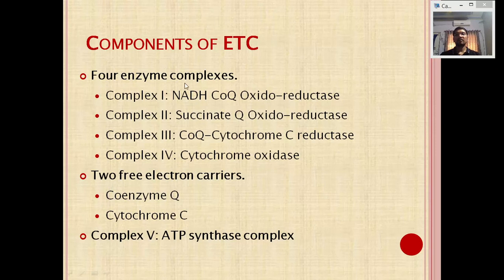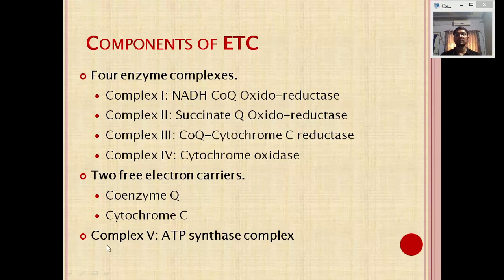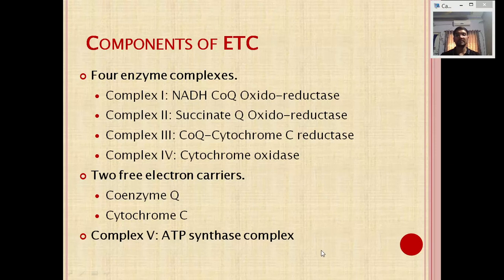Along with the four fixed complexes, two mobile carriers are also present: coenzyme Q and cytochrome C. Additionally, one more complex is present in the inner mitochondrial membrane — the ATP synthase complex, which is part of oxidative phosphorylation. Overall, the ETC consists of 4 fixed complexes (Complex 1, 2, 3, 4), 2 mobile carriers, and one fixed complex for oxidative phosphorylation — the ATP synthase complex.